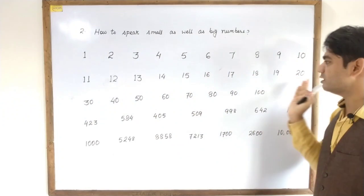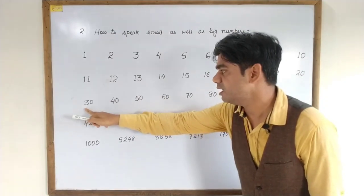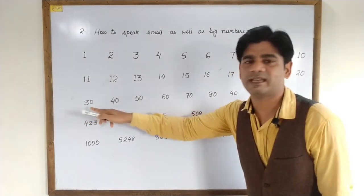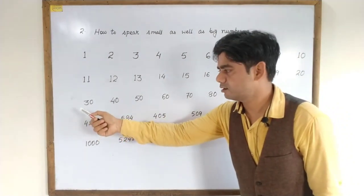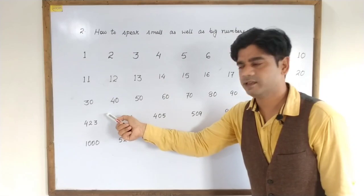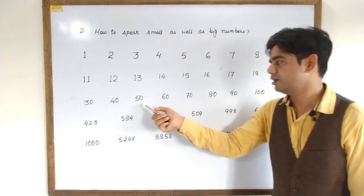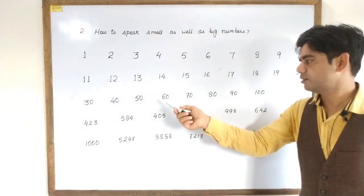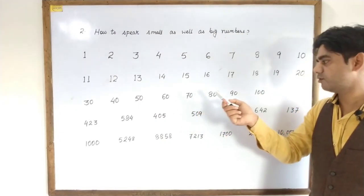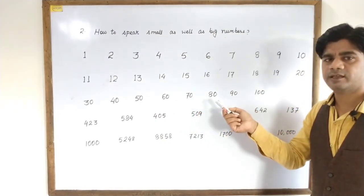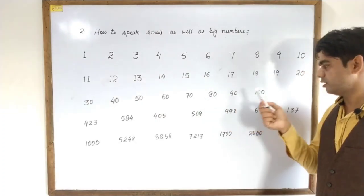Fourteen. Fourteen. Repeat after me twice. Fifteen. Fifteen. Sixteen. Sixteen. Seventeen. Seventeen. Eighteen. Eighteen. Nineteen. Nineteen. Twenty. Twenty.